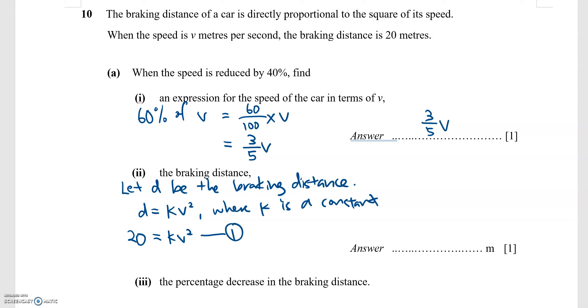After the speed has been reduced by 40%, we will now use the new speed and form a second equation. So d is now k times 3 over 5 v squared. This is for the new speed and braking distance.